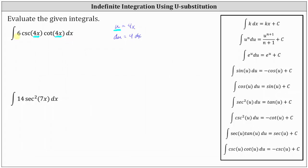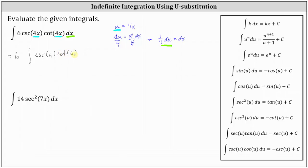Notice our integral contains 6 dx. So we're going to solve for dx by dividing both sides by 4. Dividing both sides by 4 and simplifying, we now have 1/4 du equals dx. If 1/4 du is equal to dx, we can replace dx with 1/4 du and have a simpler integral only in terms of u. Let's write the integral in terms of u — factoring out the 1/4 du, we have 6 times the integral of cosecant u times cotangent u, and differential x equals 1/4 du.